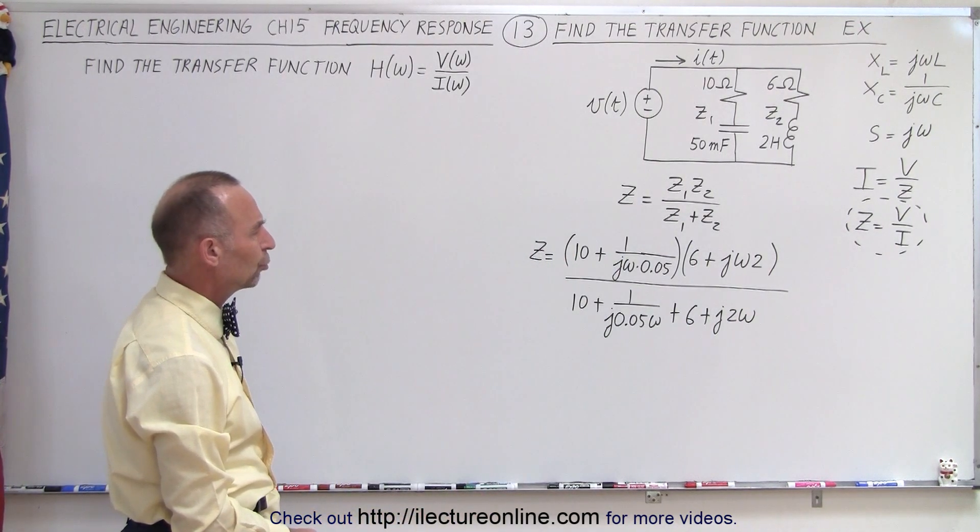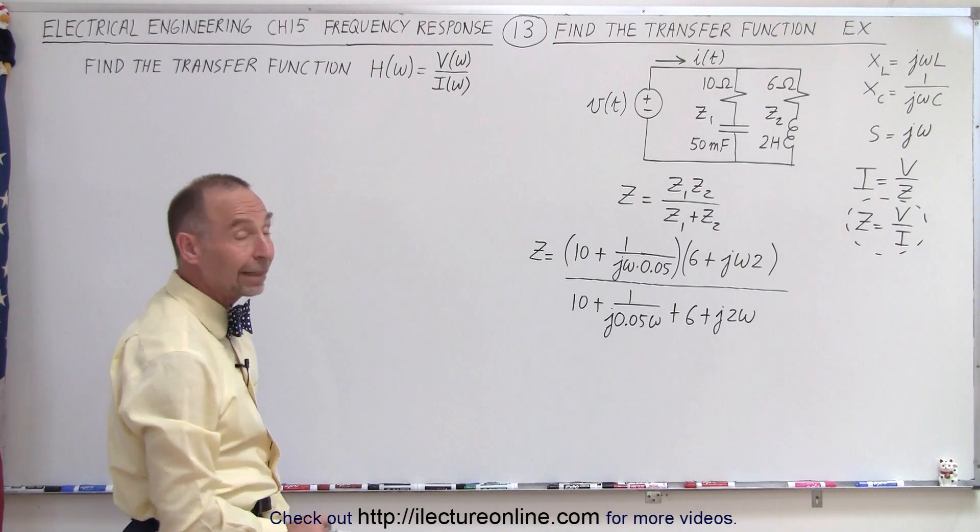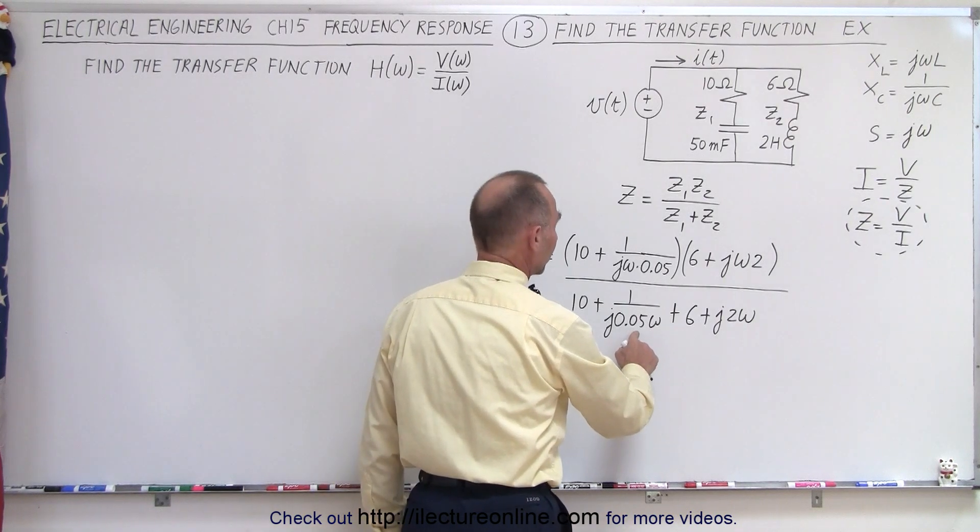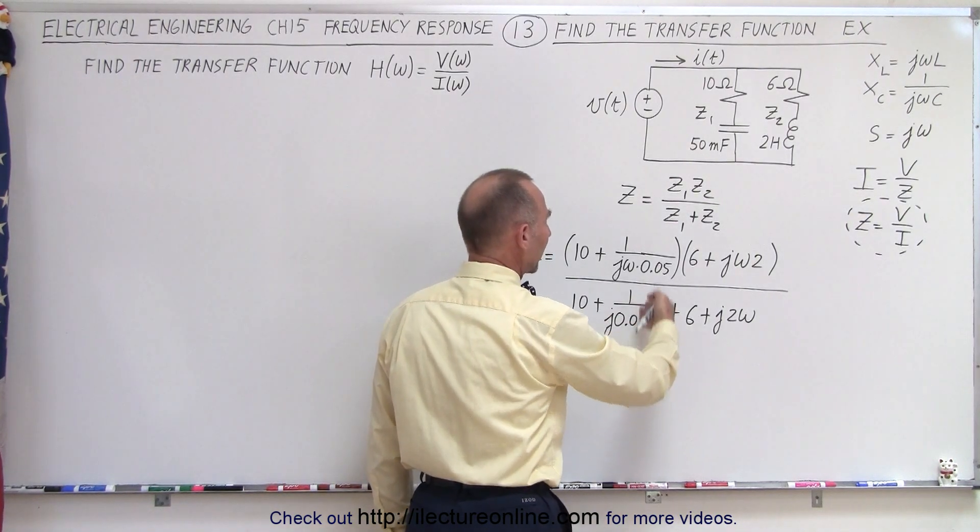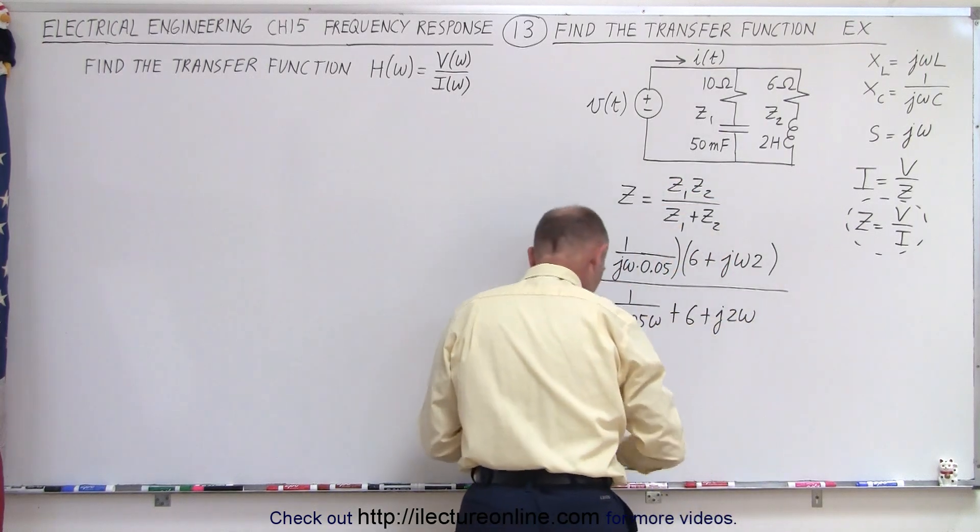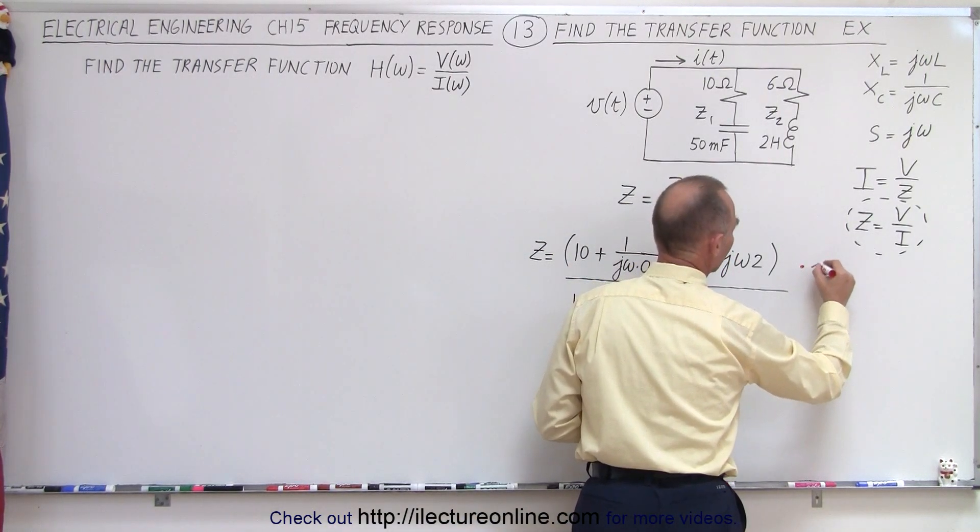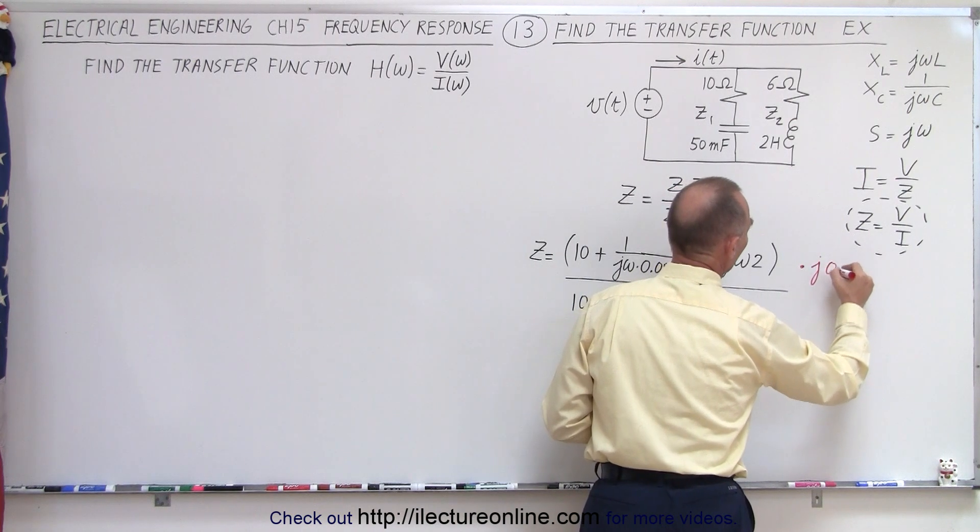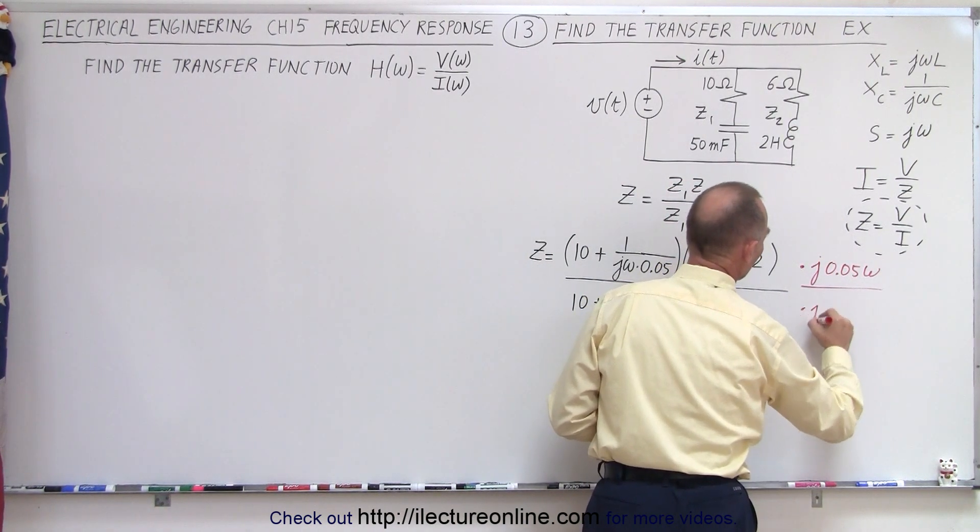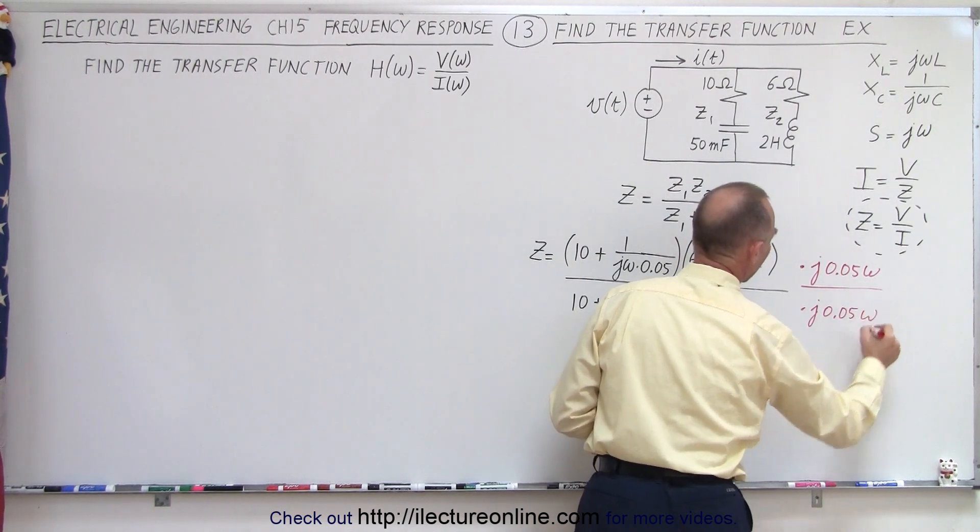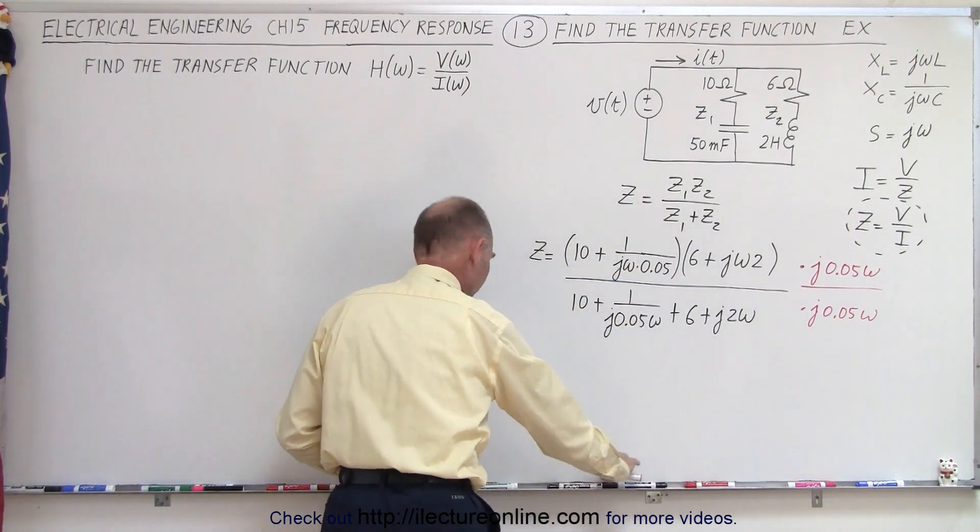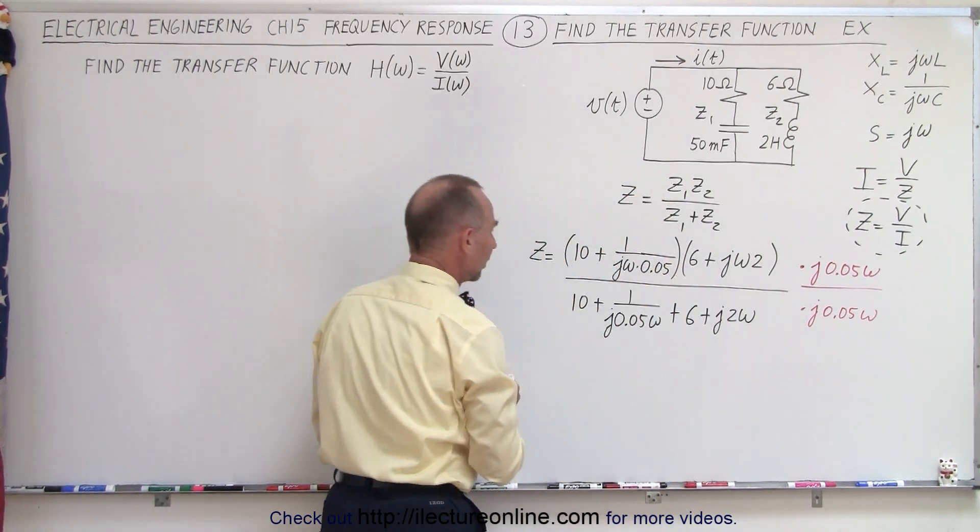Now, what should we do? I think what I'm going to do is multiply both the top and the bottom by J omega times 0.05, because that way I can get rid of that. So, multiply the top and the bottom by J 0.05 omega.